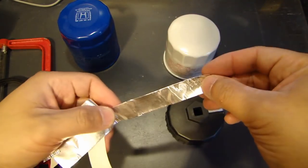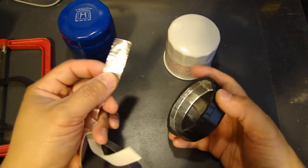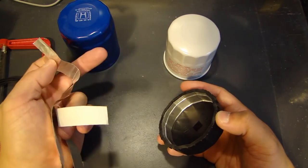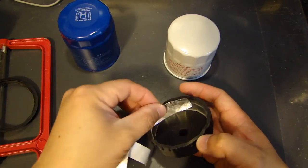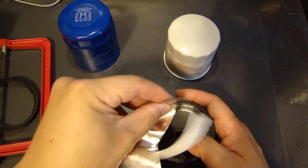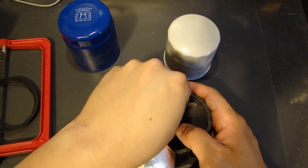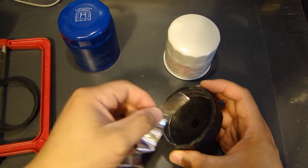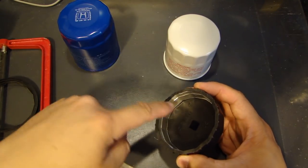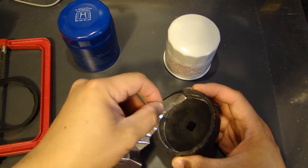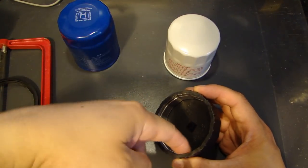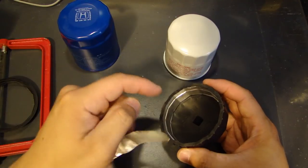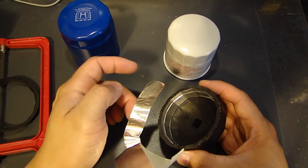So after you get the strip that you need, then what you want to do is go inside. And as you can see, this one's already done, but I'm just going to show you. Basically you place that strip inside here. So what you want to do is wrap it around inside with the sticky side towards the inside of the filter wrench.